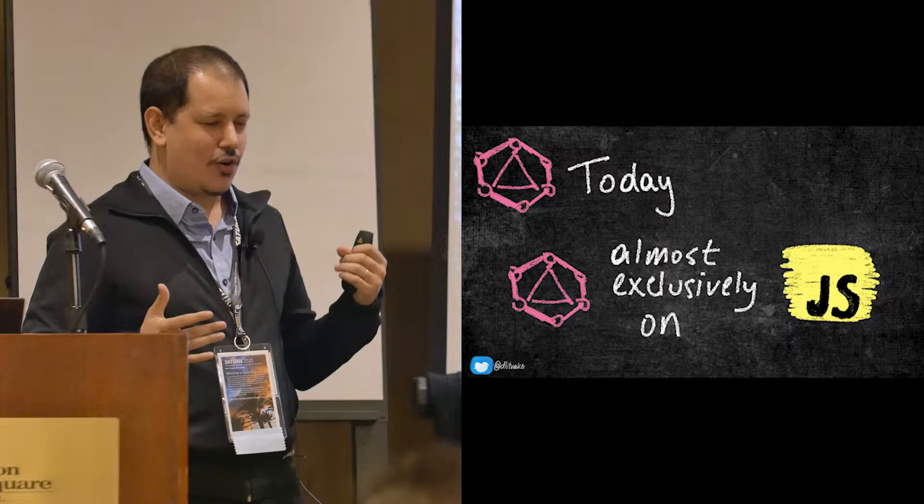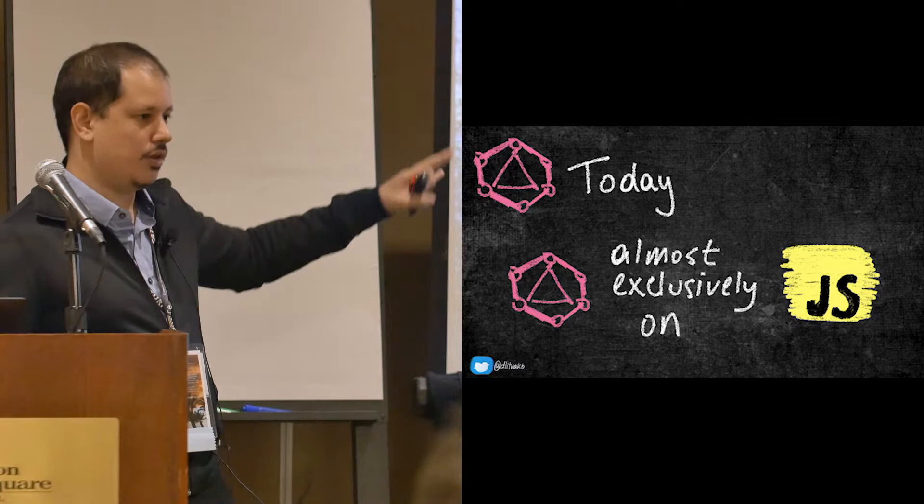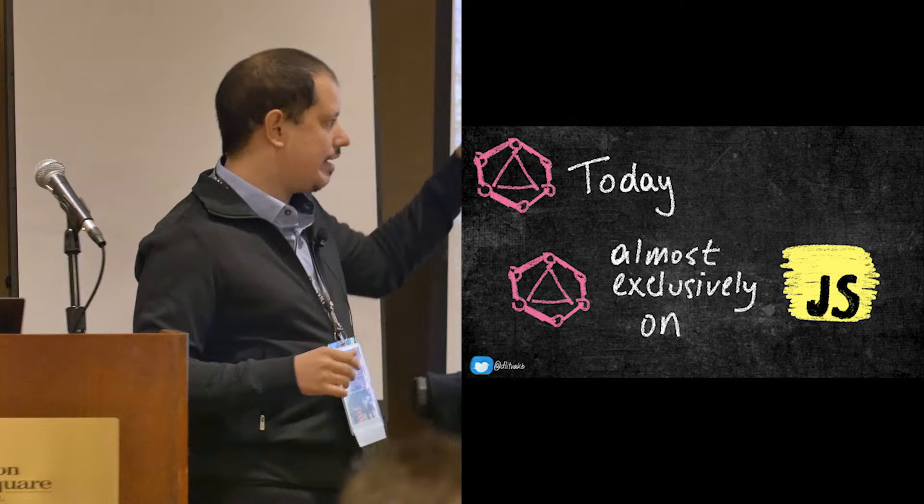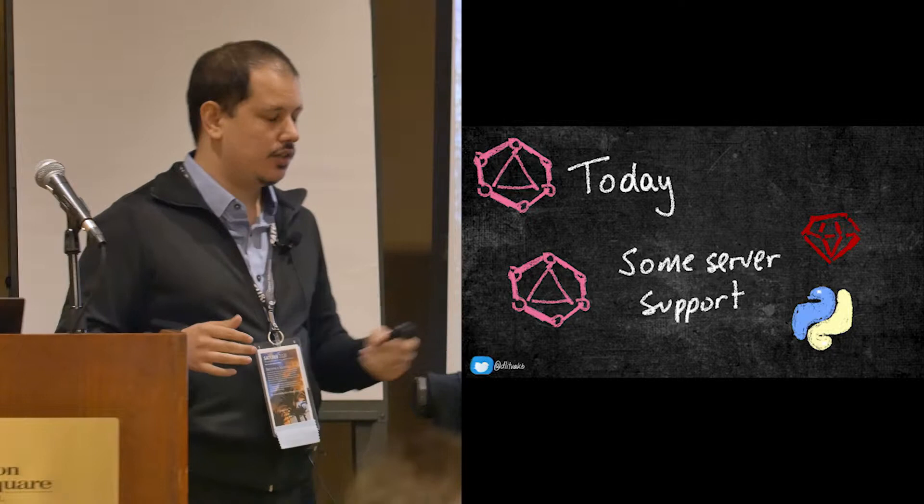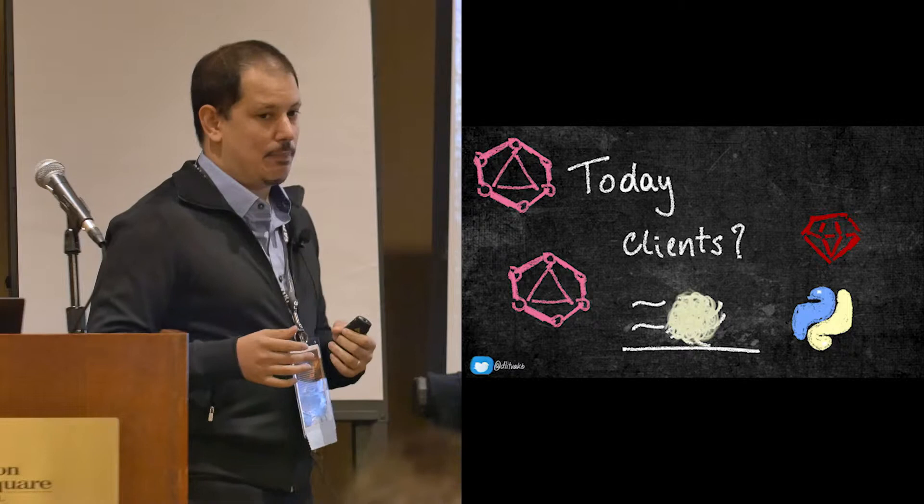Also, GraphQL is almost exclusively on JavaScript. There is very, very good support also for mobile, in particular iOS. Also for Java, with Apollo, which is this technology that ThoughtWorks has seen adopt. It has a framework for servers in JavaScript, iOS, and Android, and also for clients in these three technologies. There's also some server support, not by Apollo, but other frameworks. In Ruby, there's GraphQL Rails, and Python, there's Graphene, which is also available for Node.js, which are actually really amazing. But for clients, it's a little bit of a wasteland. There's really no support on the backend for clients.